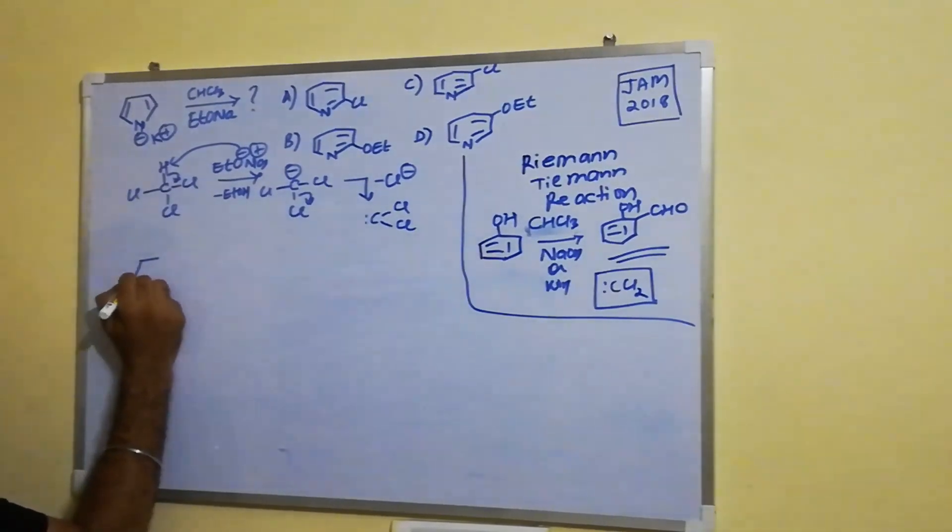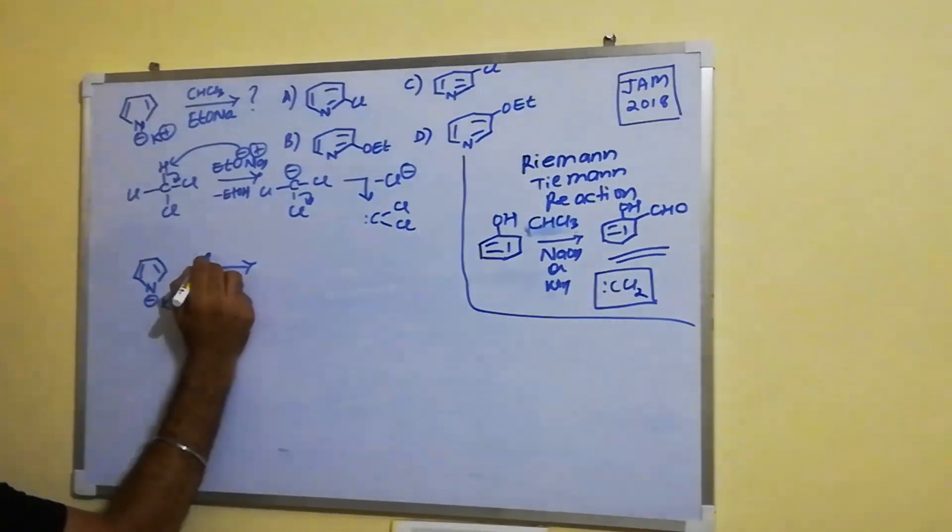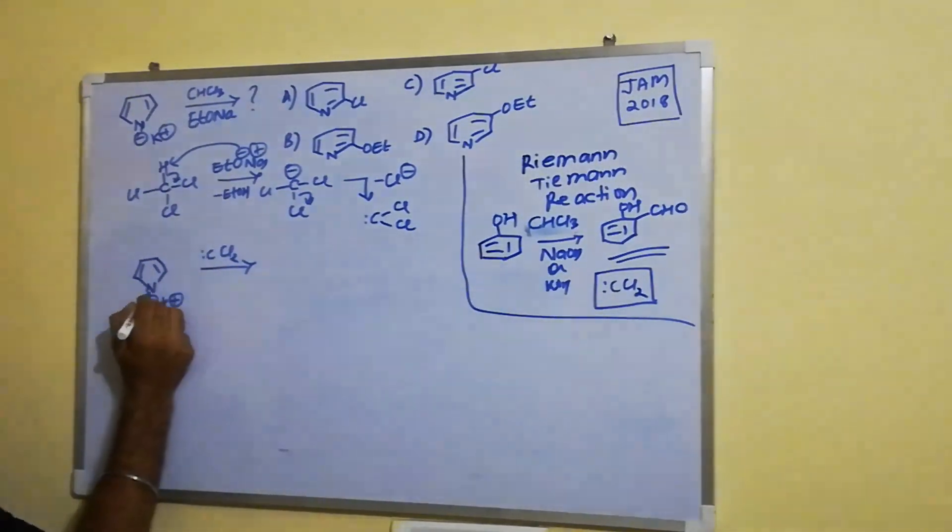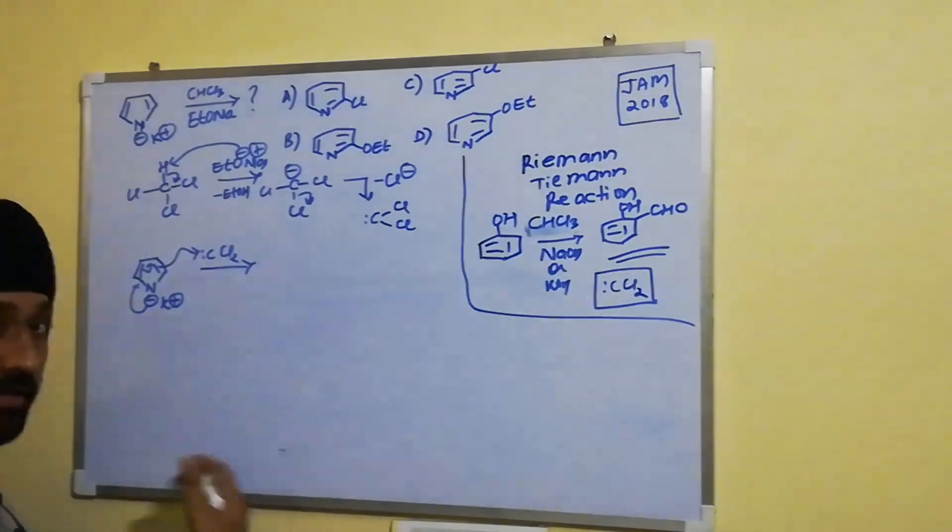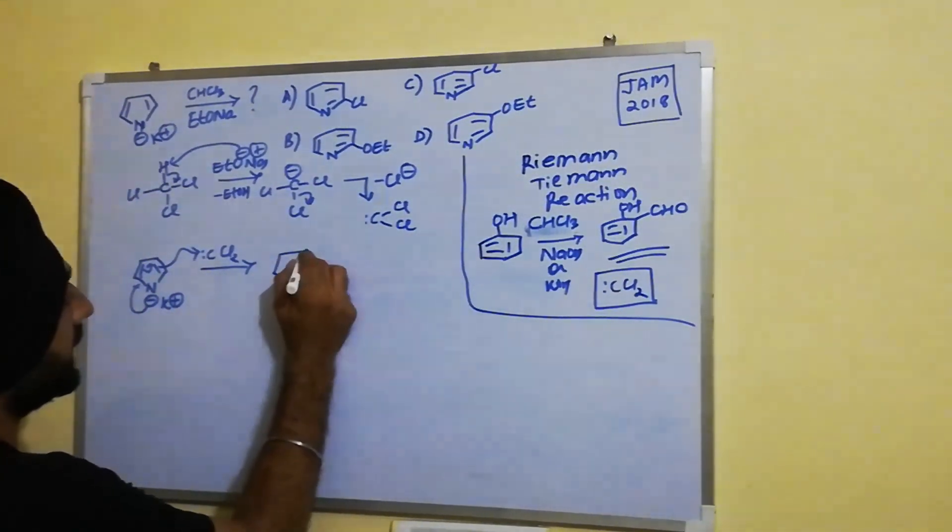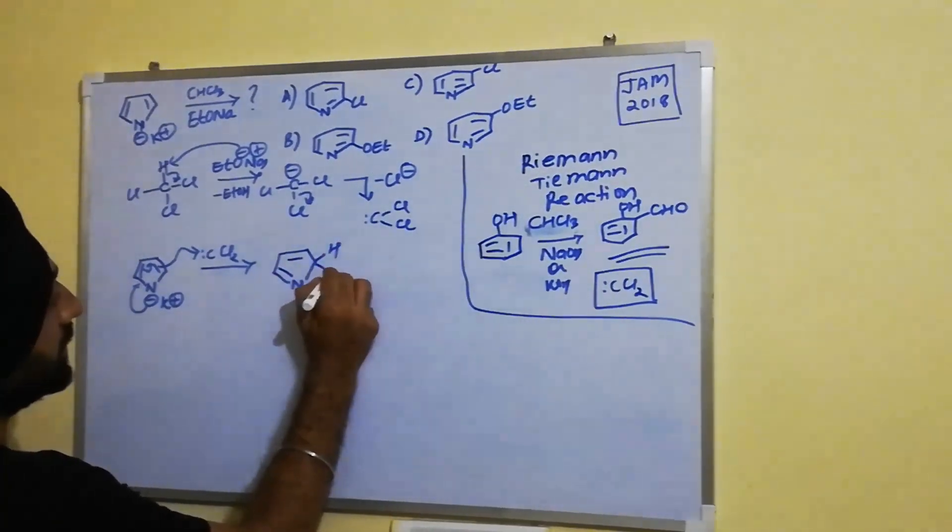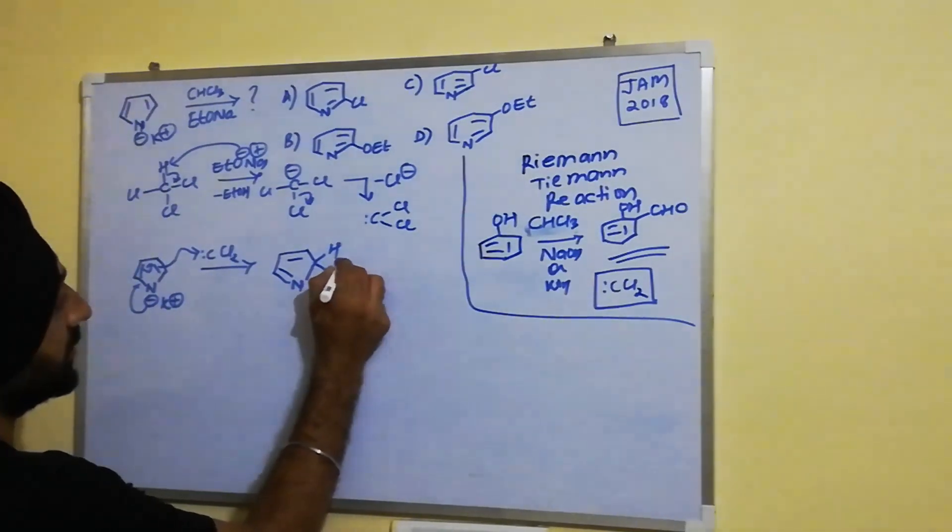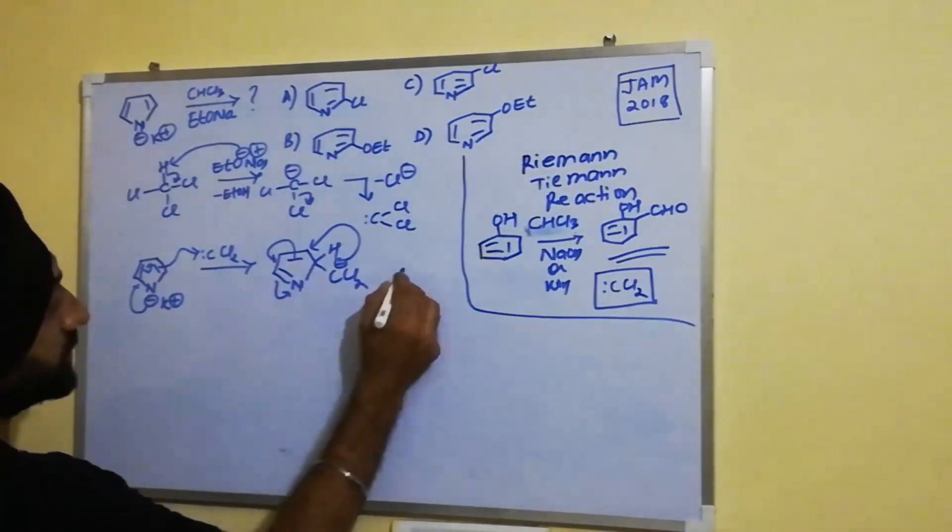And then we have this potassium salt of pyrrole which attacks this dichlorocarbene because they are very reactive species. And then it leads to the formation of this particular species. Now this negative charge again goes back.